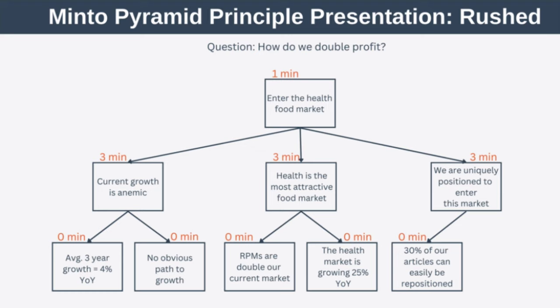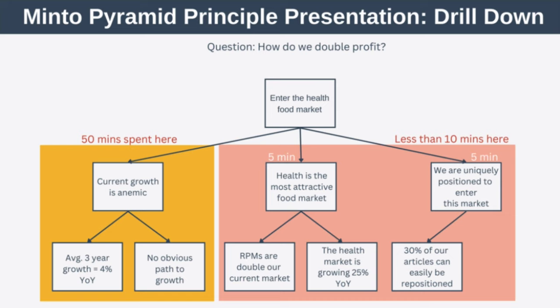Suppose during your one-hour presentation an executive disagreed with some of your reasoning. In that case you could spend extra time discussing that pyramid branch and skim through the rest. The real advantage of the Minto Pyramid Principle when giving a presentation is that even though you're chopping and changing the slides you're showing to fit the available time, the actual message you're delivering doesn't change at all, nor do you miss any critical components of your argument — hence the completeness of your message remains intact.